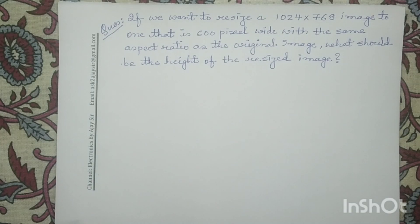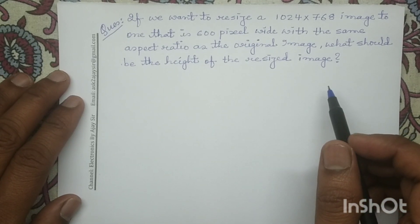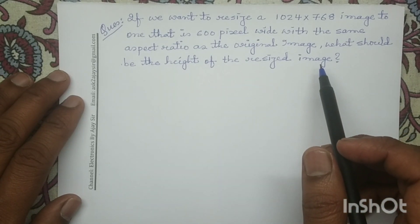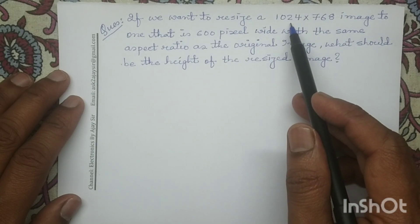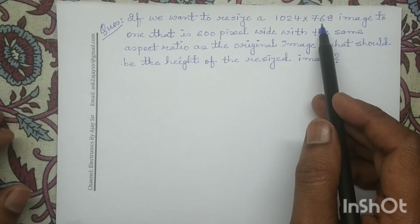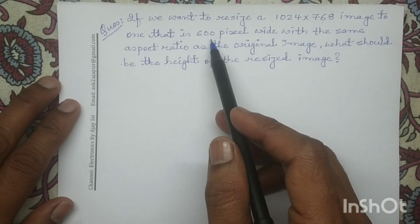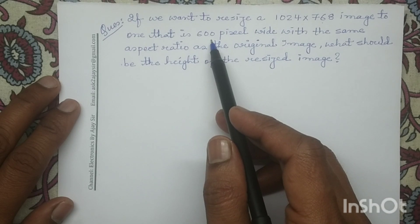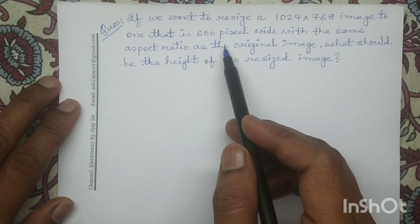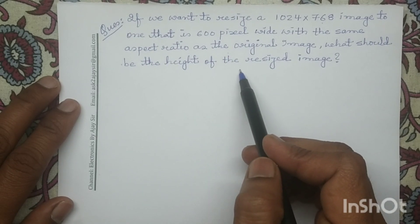Good morning all. Let us solve one numerical question on image aspect ratio. In this question, the dimension of the original image is given as 1024 cross 768. Now this image we have to resize to another dimension having width 600 pixels, and the aspect ratio remains the same as that of the original image. We have to determine what is the height of this resized image.